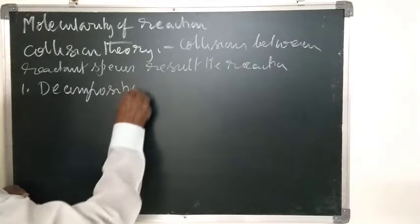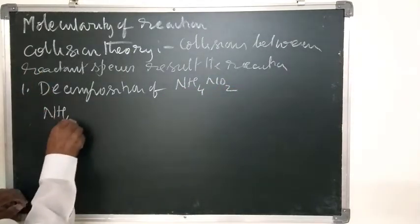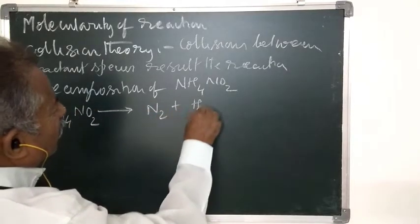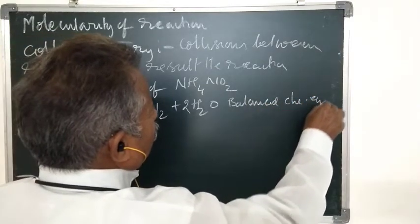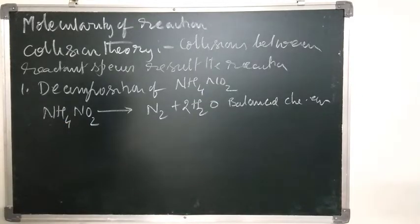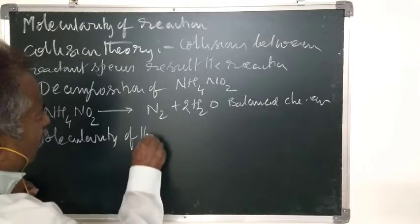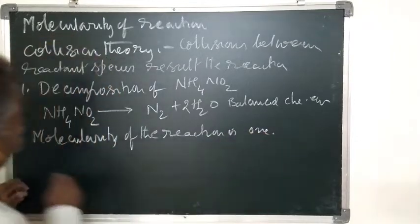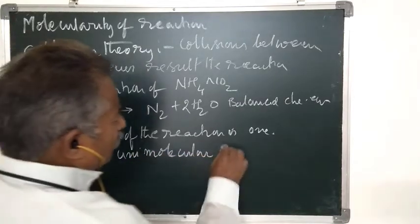For example, decomposition of ammonium nitrate: NH4NO2 decomposes to N2 plus H2O. In this reaction, only one molecule undergoes collision — it may collide with walls of the container — therefore the reaction takes place. Since only one molecule undergoes collision, the molecularity of the reaction is one. Therefore, this is referred to as a unimolecular reaction.